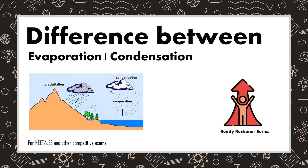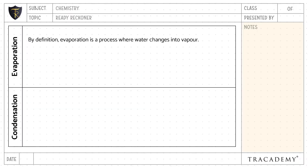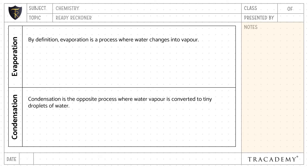In this video, let's understand the difference between evaporation and condensation. By definition, evaporation is a process where water changes into vapor, whereas condensation is the opposite process where water vapor is converted into tiny droplets of water.